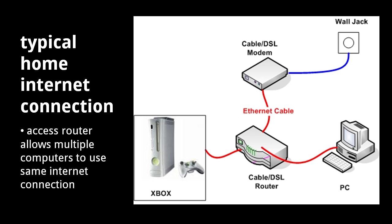First, a router allows multiple devices to share a single IP address using network address translation. Second, virtually all routers today provide wireless Ethernet connectivity. And third, routers usually provide firewall functionality, meaning the router can help filter unwanted traffic that may maliciously try to exploit security holes in your hardware and software. So all packets sent between your devices and your service provider typically travel through both an access router and a modem. And quite often, the modem and access router are combined into one device.